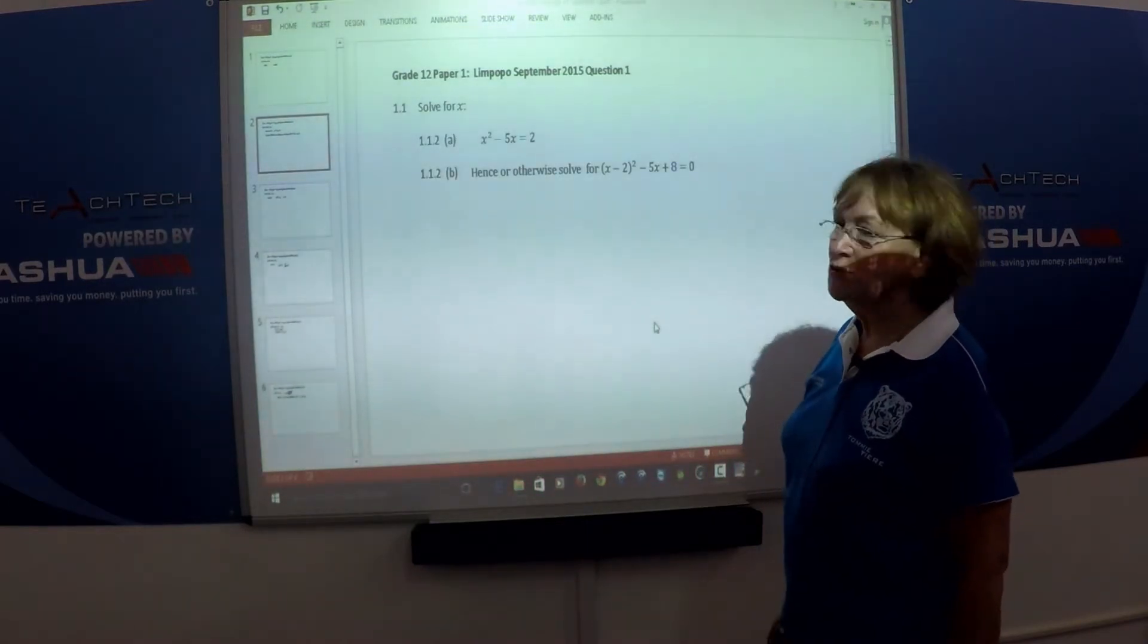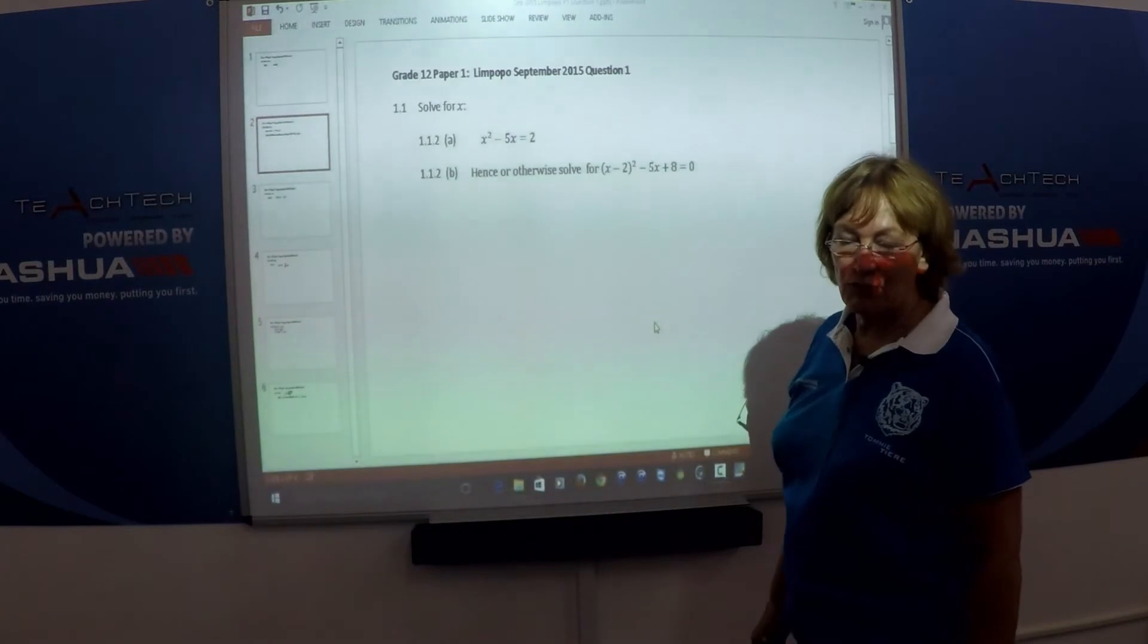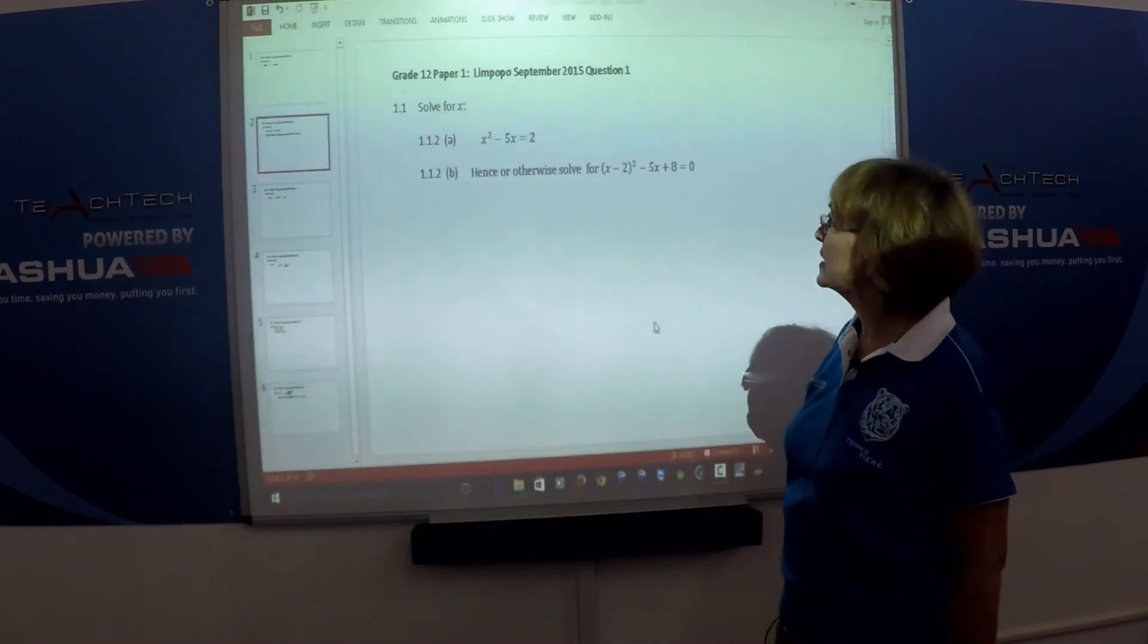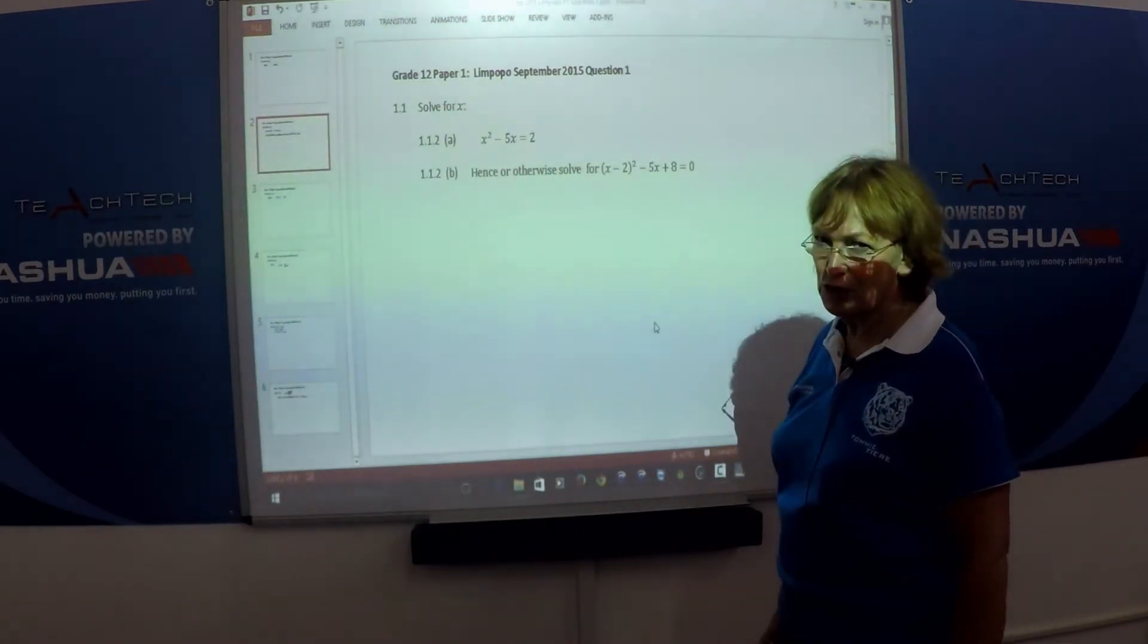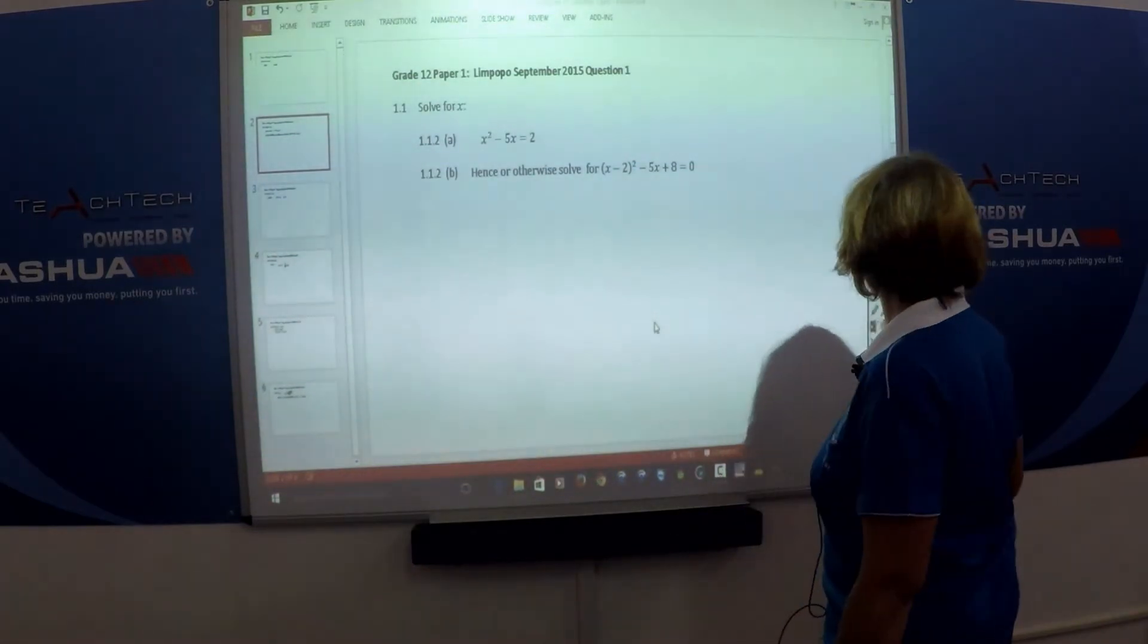Question 1.1.2 has two sections. We first have to solve a quadratic equation, and then from that solution you're supposed to find the next solution. Let's see how this is going to work.